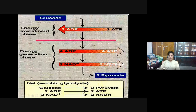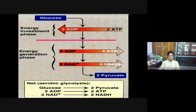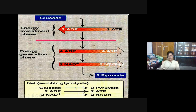In glycolysis there are two phases. The first is the energy investment phase, or preparatory phase — the first five reactions of glycolysis are energy-consuming. The next five reactions are the energy generation phase, or energy-producing reactions.